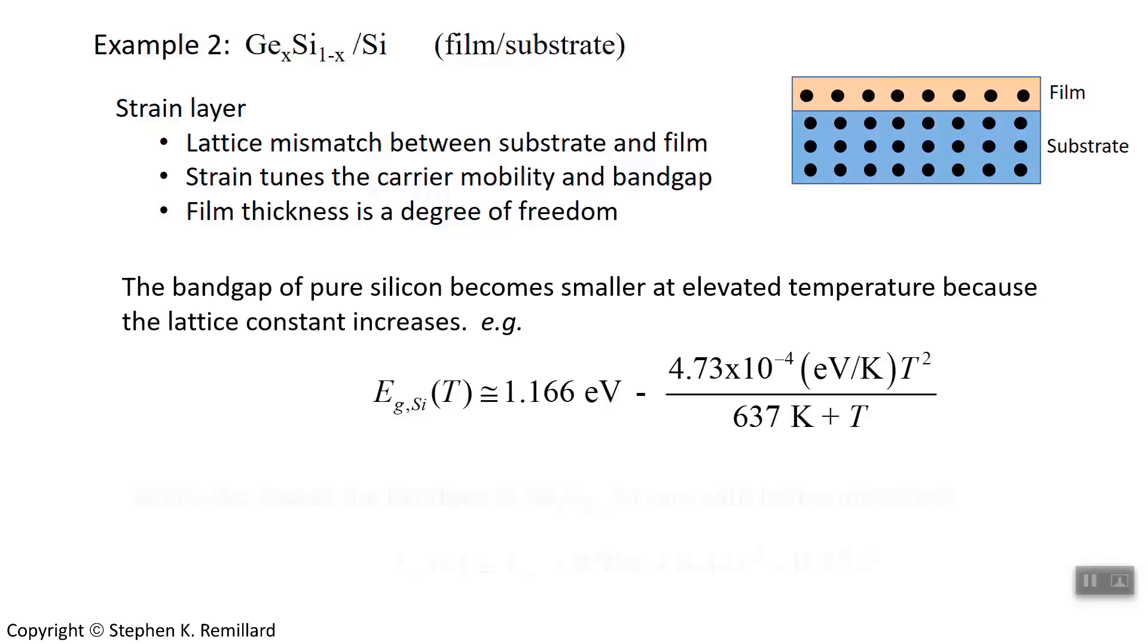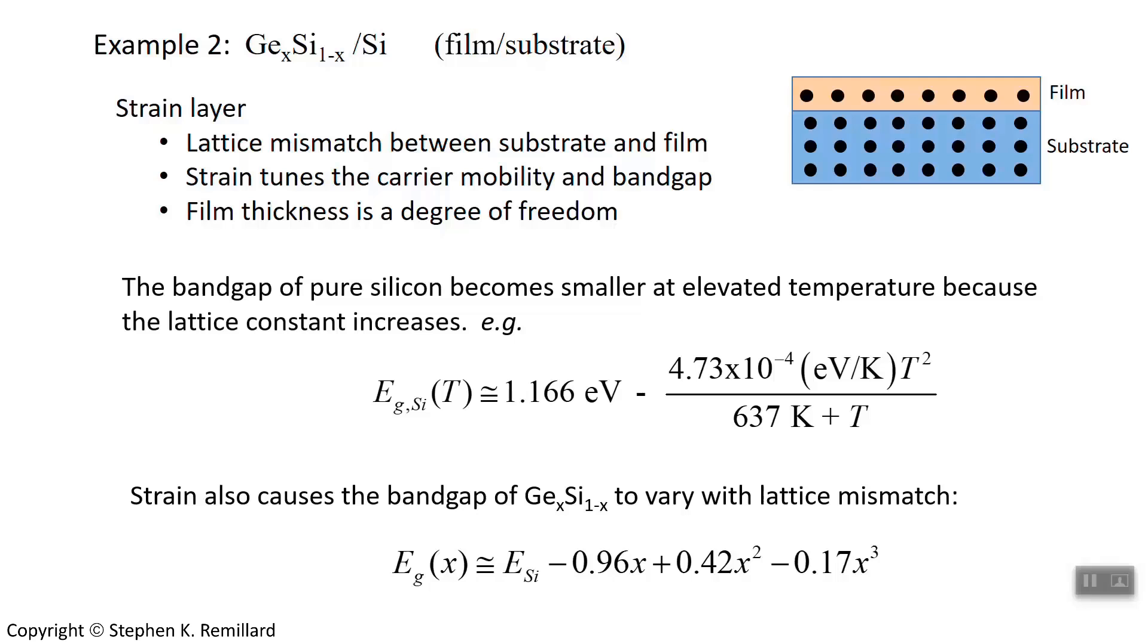Now let's go back to germanium silicide. The empirical relationship for the bandgap begins with silicon, because that's where x equals 0, that's all silicon. Then it changes as you start to add germanium. What's happening as you add germanium is a change in the strain in the thin film, and that is what dominates the variation of the energy gap, besides the fact that there's germanium present.